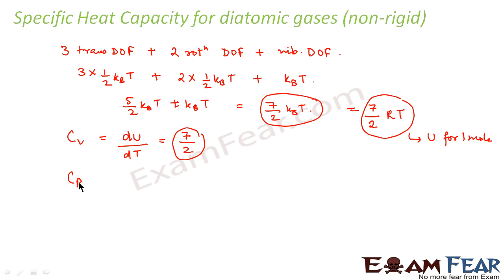So what is Cp? Cp is nothing but Cv plus R. So this is 7 by 2 R plus R that is equal to 9 by 2 R.